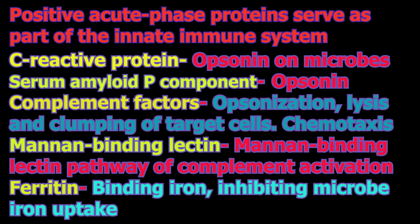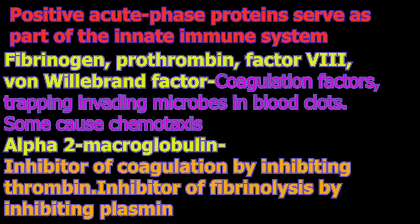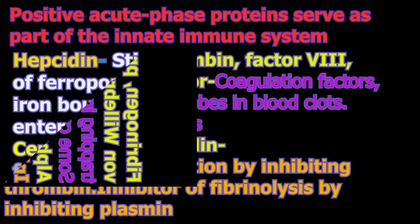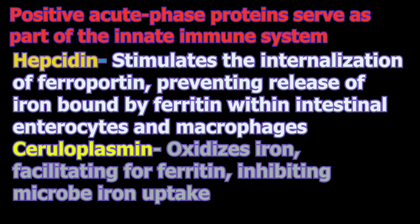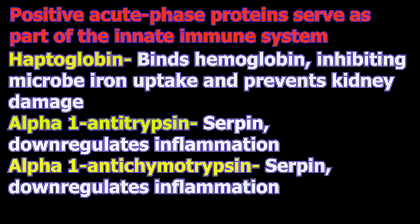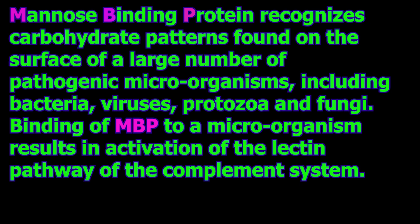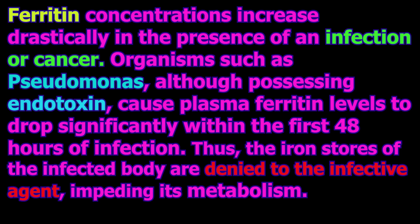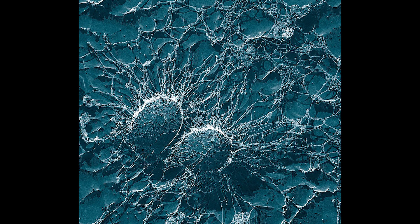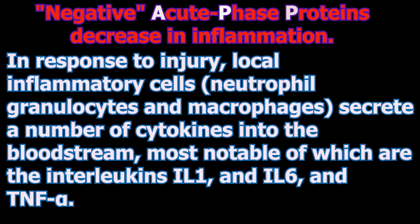CRP is a positive acute phase protein, meaning its level increases in response to infection or inflammation. CRP levels are raised in infection or any inflammation; it does not point to a single cause or disease. Positive acute phase proteins serve physiological functions within the immune system — some act to destroy or inhibit growth of microbes, such as C-reactive protein, mannose-binding protein, and complement factors.